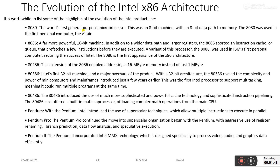Next is the 8086, a far more powerful 16-bit machine. In addition to a wider data path and larger registers, the 8086 supported an instruction cache or queue that prefetches a few instructions before they are executed. A variant of the processor, the 8088, was used in IBM's first personal computer, securing the success of Intel.